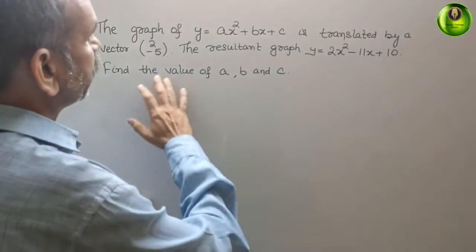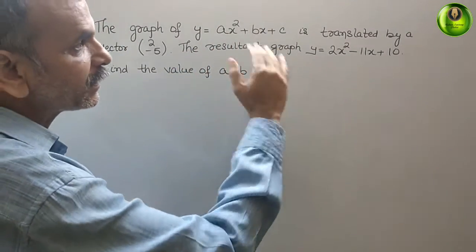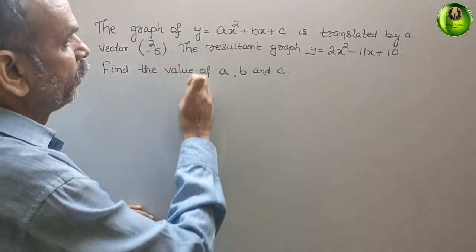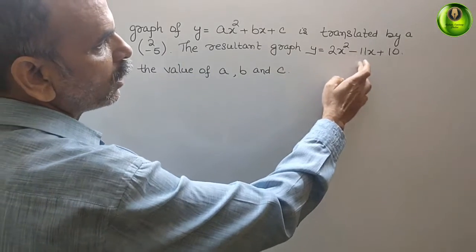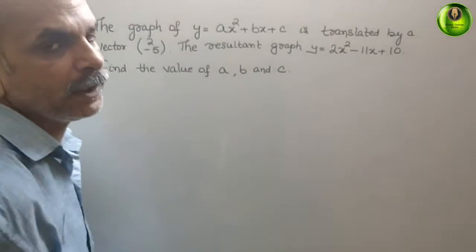Your question is: the graph of y equals ax² plus bx plus c is translated by vector 2 comma minus 5. The resultant graph y equals 2x² minus 11x plus 10. Find the value of a, b, and c.